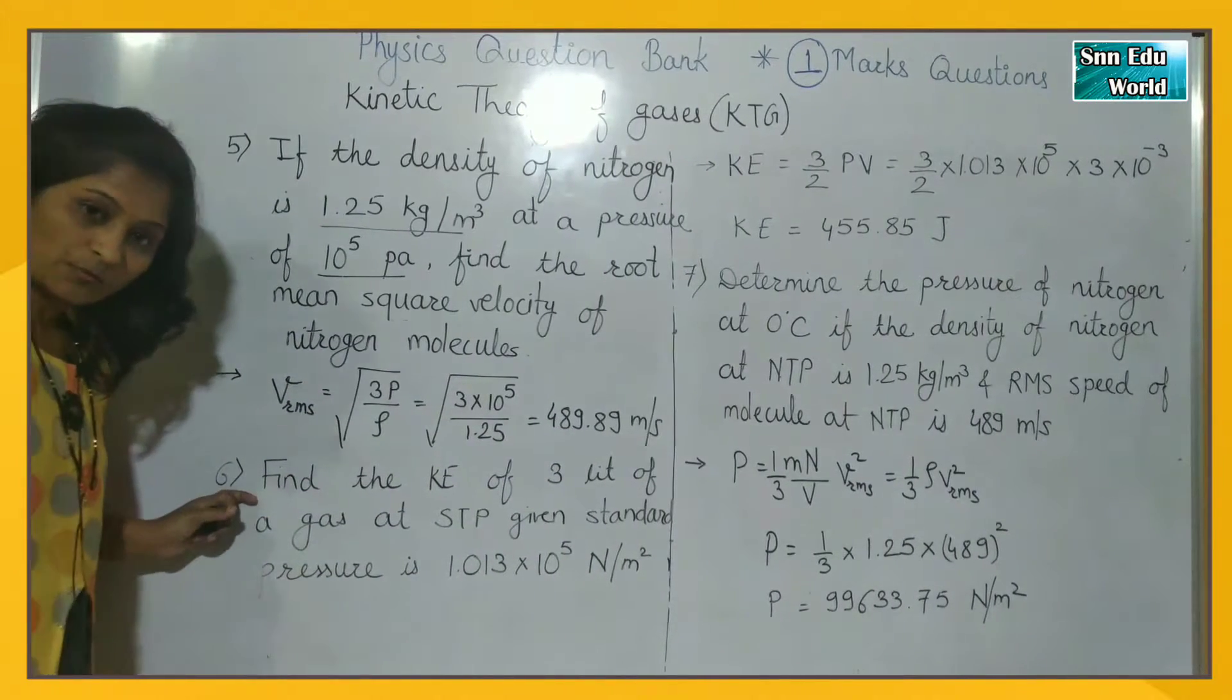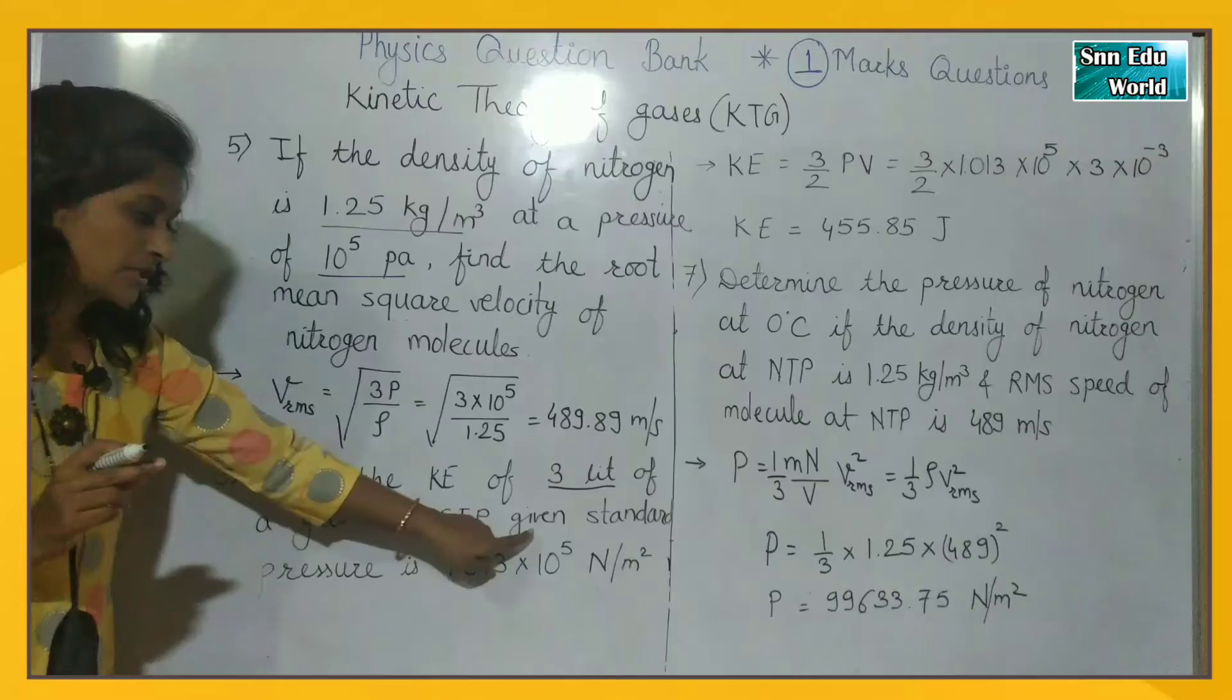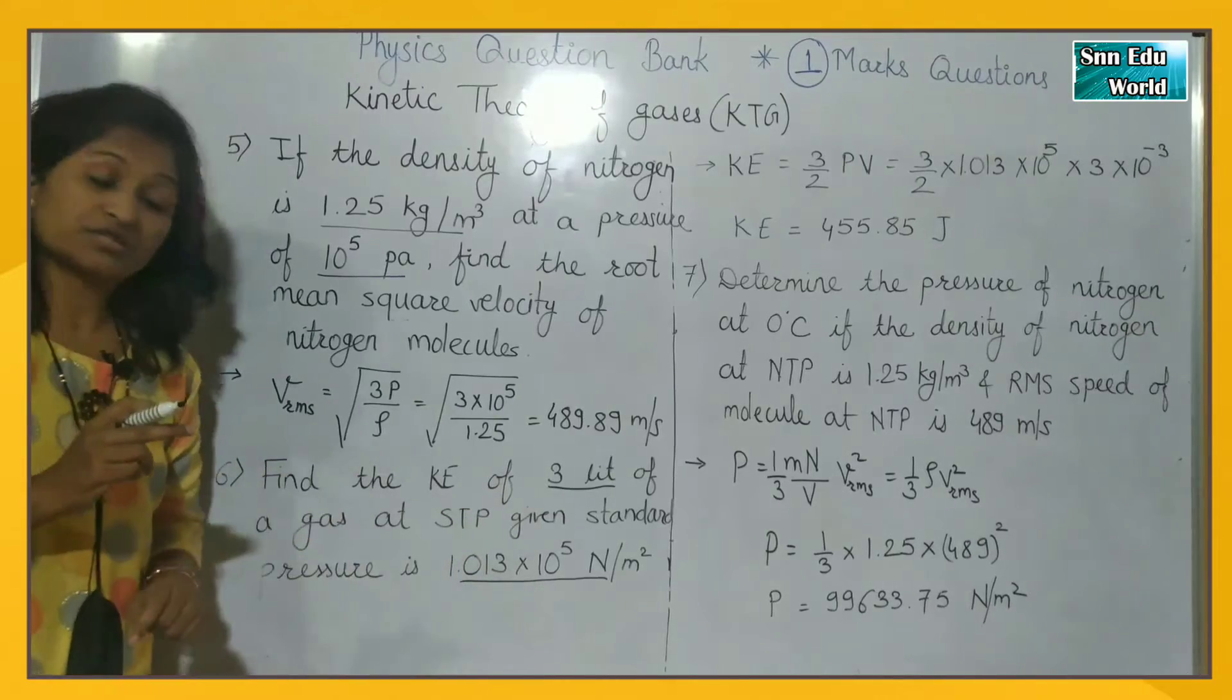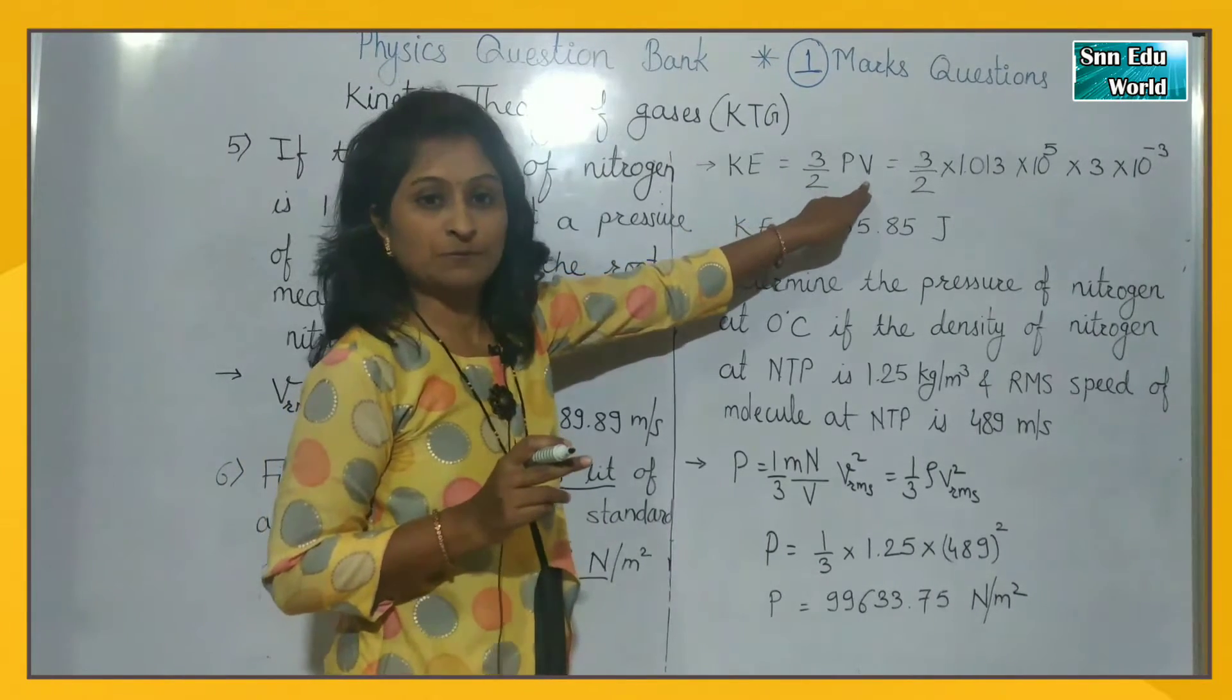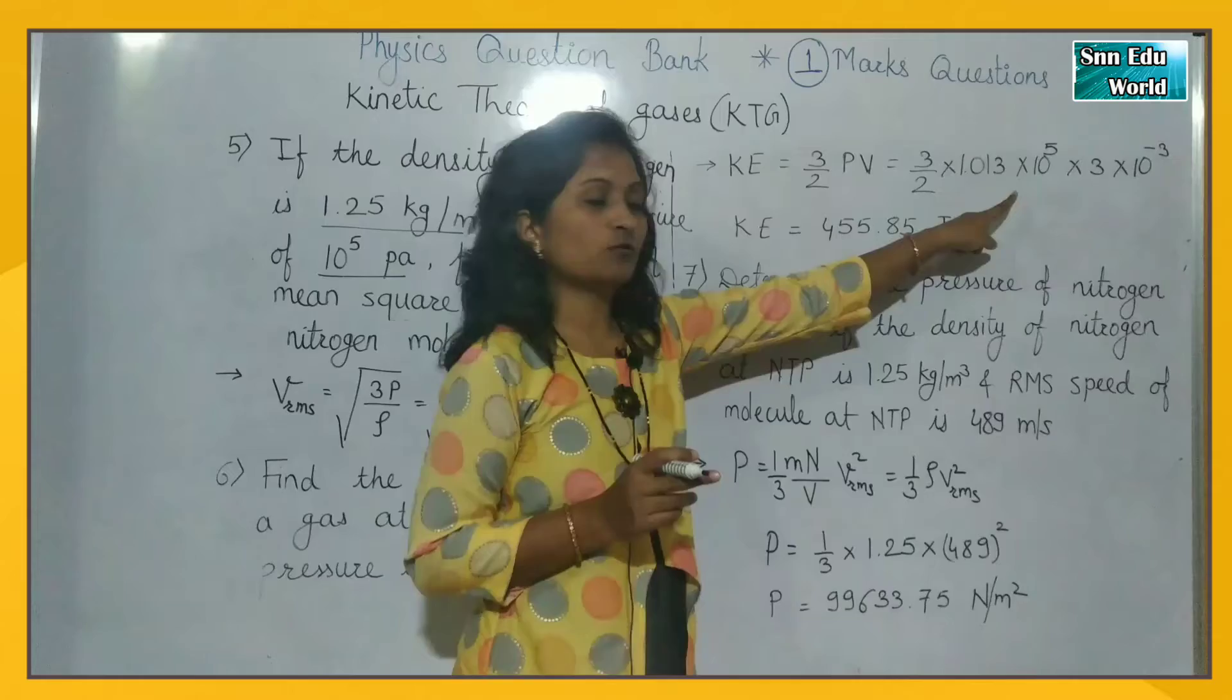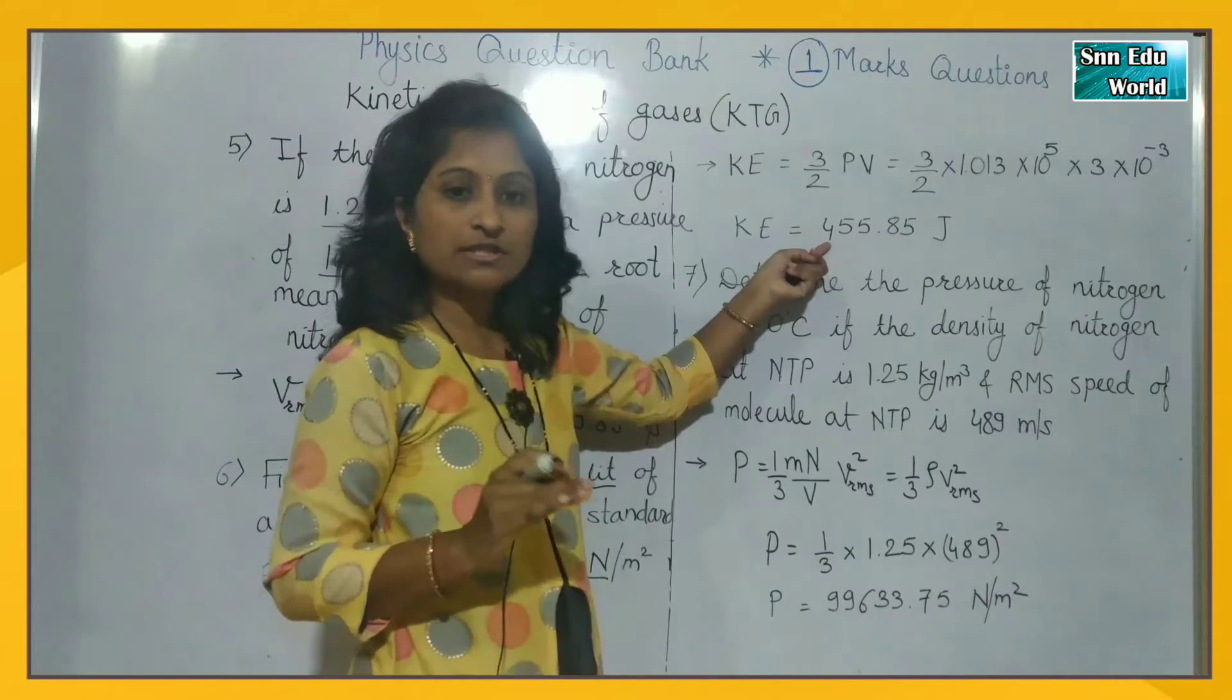Next question, again it is a problem. Find the kinetic energy of 3 liter of a gas. Now it is given as a volume in liters, 3 liter of a gas at STP. Given standard pressure and temperature. So find the kinetic energy using the appropriate formula. There is no conversion in the units needed.